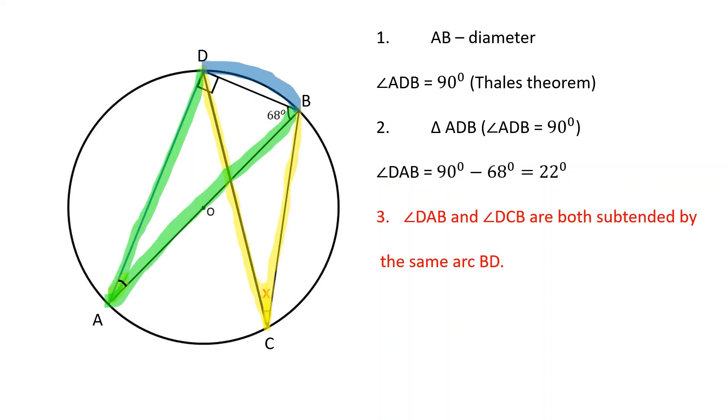Angles DAB and DCB are both subtended by the same arc BD. And since in a circle, different inscribed angles subtending the same arc are equal in measure, angle DCB is equal to 22 degrees.